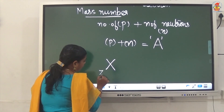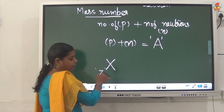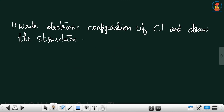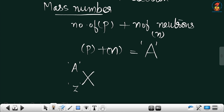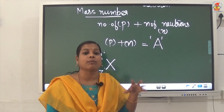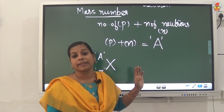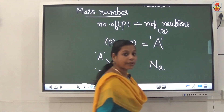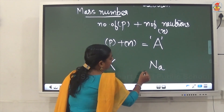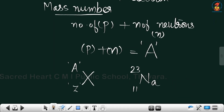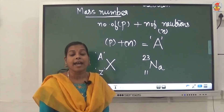The atomic number is written at the lower left and mass number is written at the top left of the element symbol. So if you know the atomic number and mass number, we can represent the element. For sodium, atomic number is 11 and mass number is 23, and this is the representation for sodium.